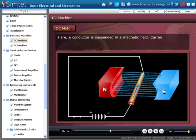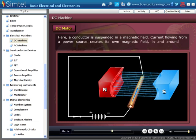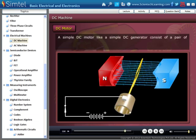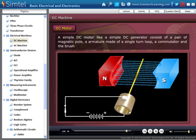Here, a conductor is suspended in a magnetic field. Current flowing from a power source creates its own magnetic field in and around the conductor. This field around the conductor reacts with the main magnetic field to cause motion of the conductor, either out of the field or into it. A simple DC motor is like a simple DC generator, consisting of a pair of magnetic poles, an armature made of a single turn loop, a commutator and the brush assembly.